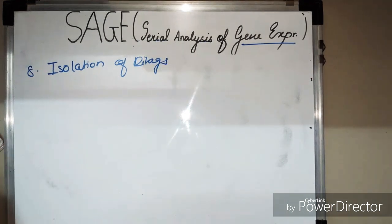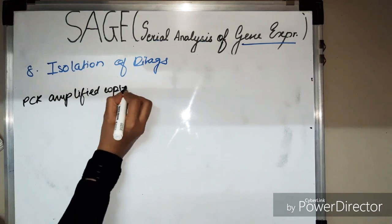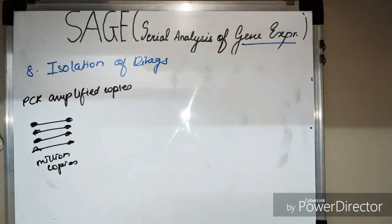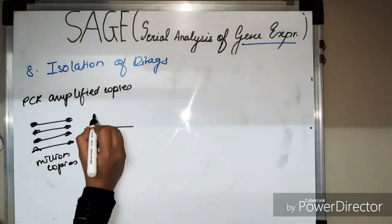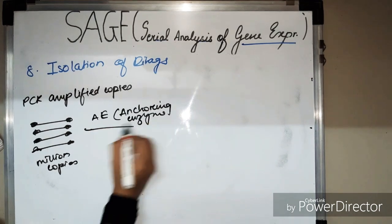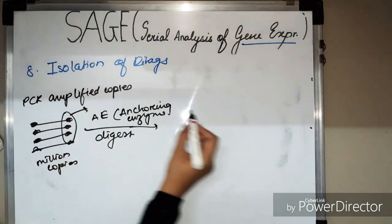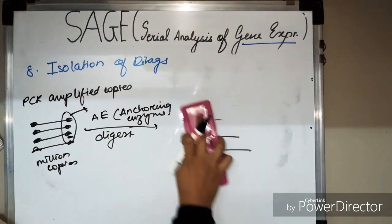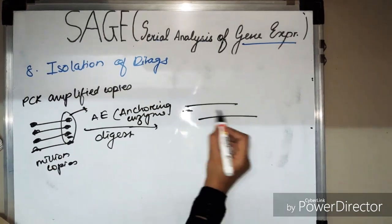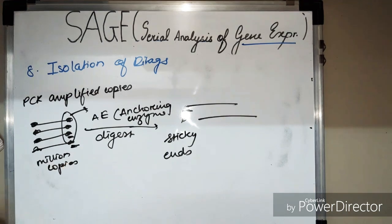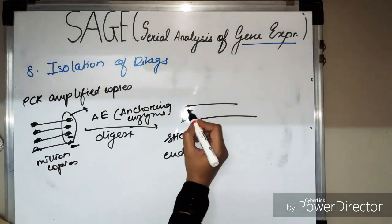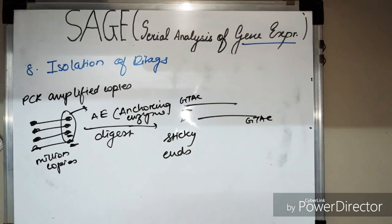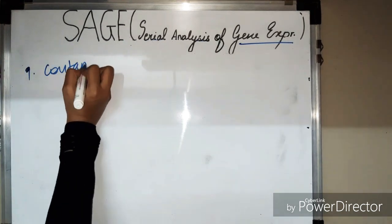In Step 8, isolation of di-tags is performed. The cDNA is again digested using an anchoring enzyme, which cleaves the di-tags and removes the linkers. This leaves sticky ends on the cDNA; these sticky ends contain the sequence GTAC at each end of the di-tag.